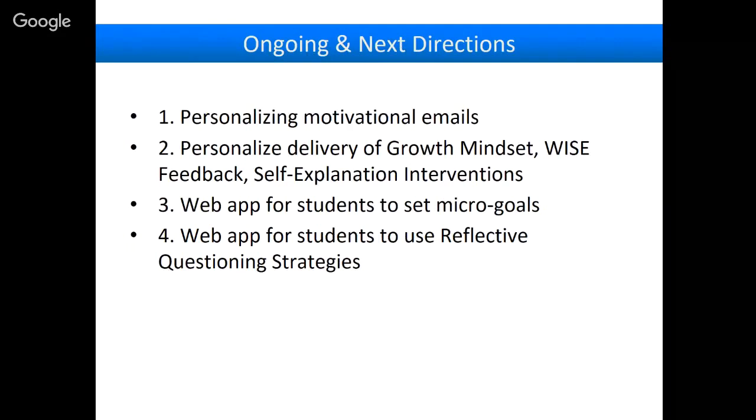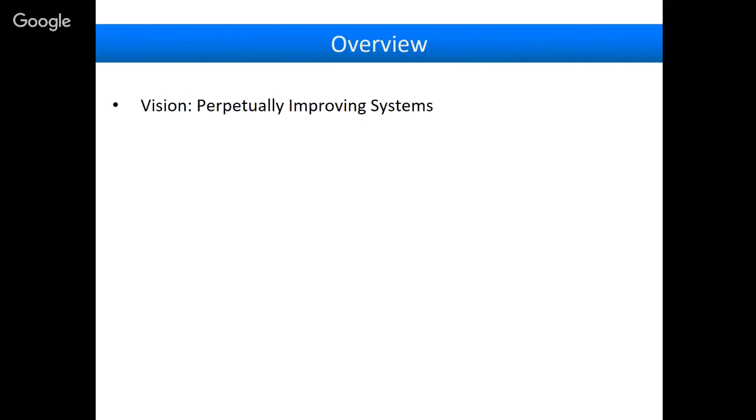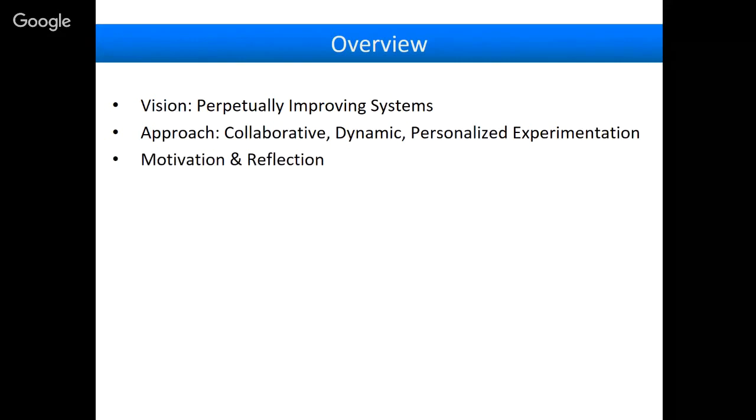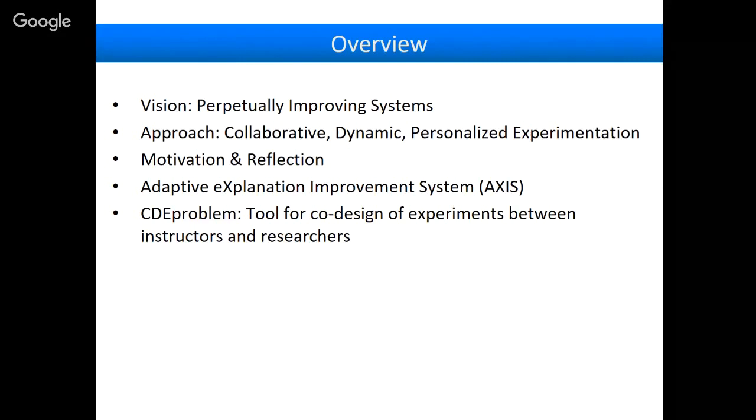Just to summarize, I started with this vision of building perpetually improving systems. My approach is collaborative, dynamic, personalized experimentation. I gave an example of a study in Khan Academy with growth mindset messages and one that prompted people to reflect. This then led to building a system which would crowdsource explanations from learners while they were explaining for their own purposes. We run a dynamic experiment to see which ones are highly rated. And this helped future learners as much as explanations from the instructor themselves. The next phase is thinking about tools that will help teachers bring their wisdom into collaborations of designing experiments with researchers. And using this kind of infrastructure to actually dynamically personalize by discovering empirically what's going to work for different subsets of people.